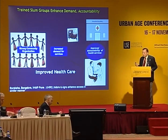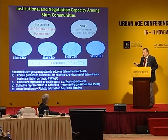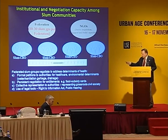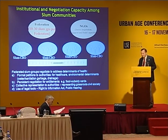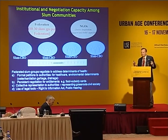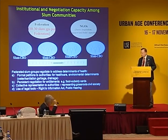This is approach three: community organization. Trained slum groups enhance access to healthcare as well as other services. Institution building and negotiation capacity building at the community level helps them address determinants of health through formal petitions to authorities, persistent negotiation, and collective representation. Actually, 20 or 50 women going to civic authorities in person and using legal tools makes a difference. India has two legal tools commonly used: the Right to Information Act and the Public Hearing — tools we have taught communities how to use.